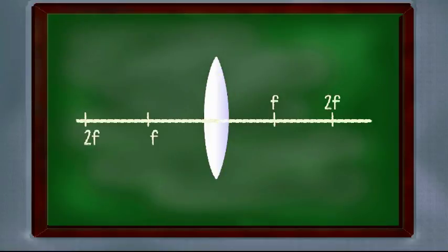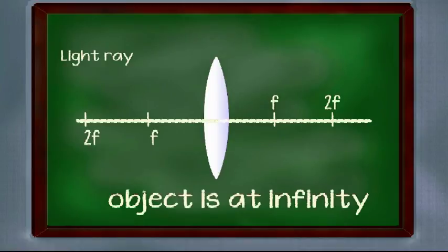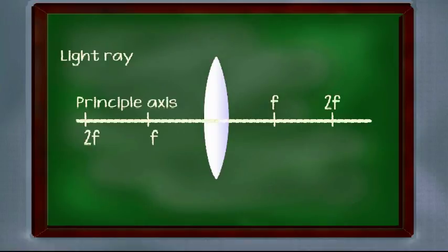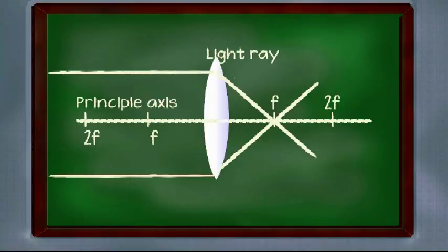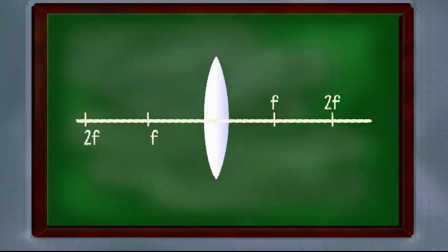So keeping these two basics in mind, let's start discussing different cases of convex lens. Case 1, when object is at infinity. When object is at infinity, its light rays will be parallel to principal axis. So all the light rays will converge to focus point and the image will be very small.